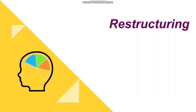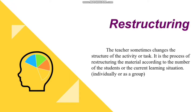The second type of modification is restructuring. The teacher sometimes changes the structure of the activity or task according to the number of students or the current learning situation. For example, when the teacher realizes the material and the number of students do not match, necessary arrangements must be made. Also, a written explanation prepared to be studied individually can be transformed into an interactive one to foster communication among students — that is restructuring.